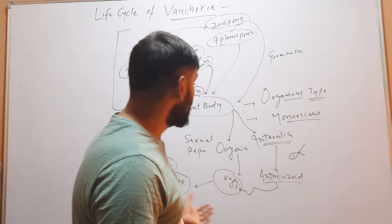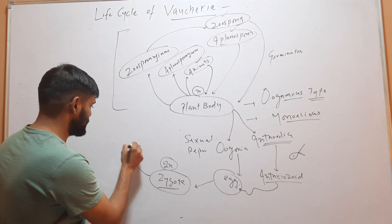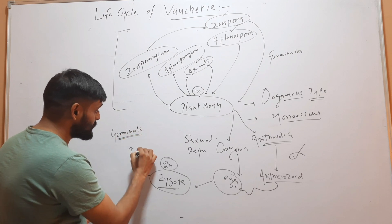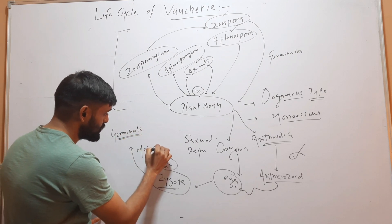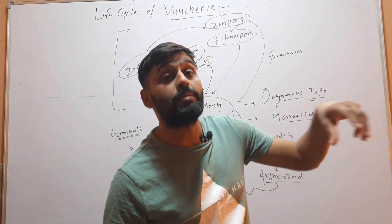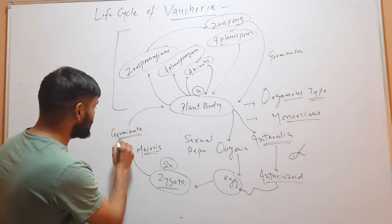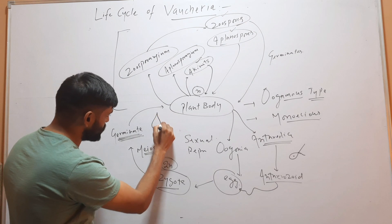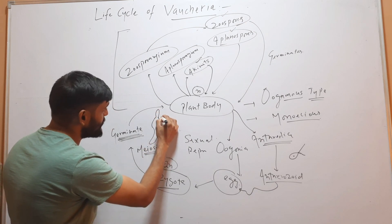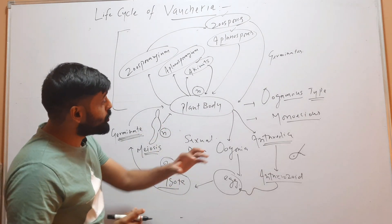The zygote is formed upon fertilization. After formation, the zygote secretes a thick wall and is liberated from the plant body. It will then germinate by meiosis — there is a meiotic division — forming a germ tube, and ultimately by germinating it forms the plant body.